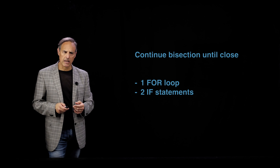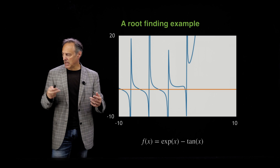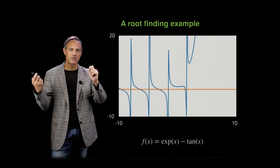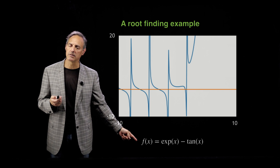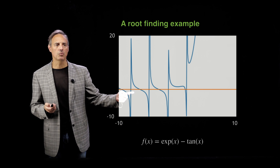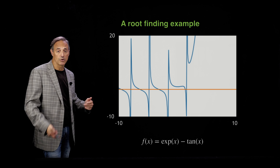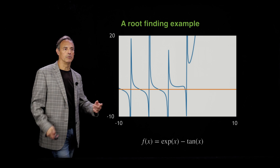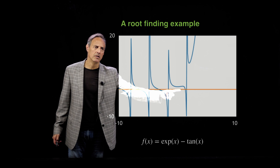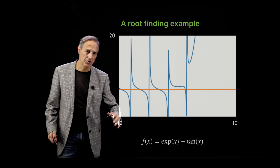Let's build this and draw some pictures. For the root finding, let's make an actual function — let's try to find roots of something transcendental like e to the x minus tangent x. If I plot that function, here's what it looks like — it's the blue curve. The orange curve is the zero line. You can see there are quite a few zeros: there's one here, one here, one over here. These are what we're actually trying to compute, on the interval negative ten to ten.